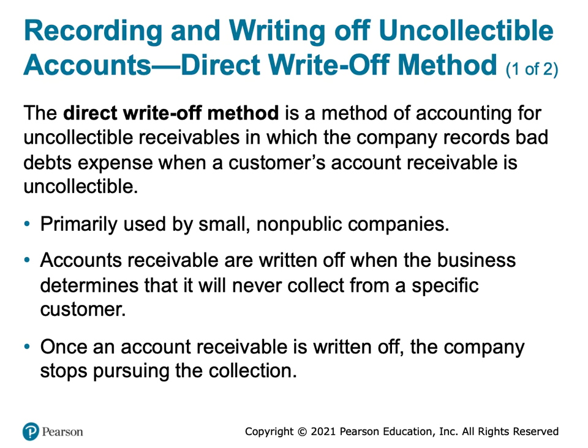Under the direct write-off method, the accounts receivable are written off and bad debt expense is recorded whenever the business determines that it's not going to collect from a specific customer. It's not predicted ahead of time — we just decide that it's been long enough and we're writing this off today. We've determined we're not going to collect from this person, and today is the day we write it off.